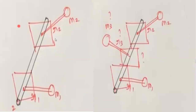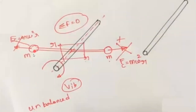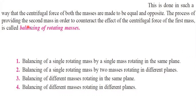We can have two different planes where masses are attached to a shaft revolving in different planes. To counter-attack this, another mass is added in a different plane. This comes under the fourth case. The process of providing a second mass in order to counteract the effect of the centrifugal force of the first mass is called balancing of rotating masses.